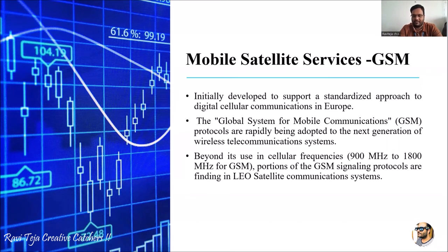The frequency range of this particular GSM is from 900 MHz to 1800 MHz. All mobile devices throughout any area which are using GSM-related signaling protocols need to operate within the frequencies of 900 MHz to 1800 MHz.